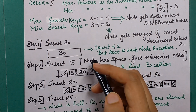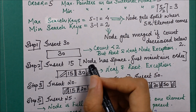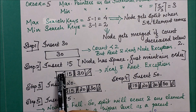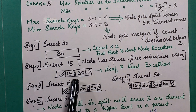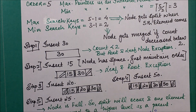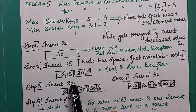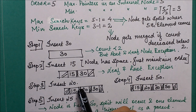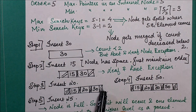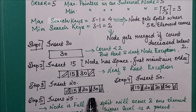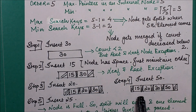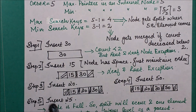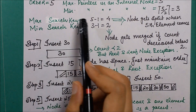We insert the next element 15, maintaining ascending order. Then we insert 20 — since the limit is 4, we continue with insertion maintaining the order of search keys. Then we insert 50, giving us the node structure after insertion of 50.